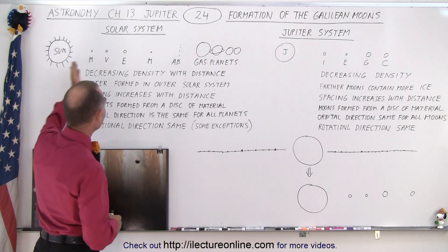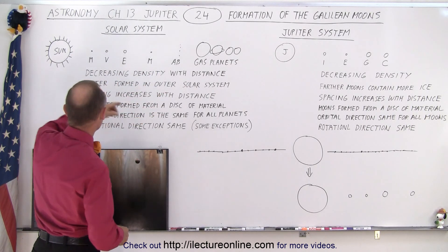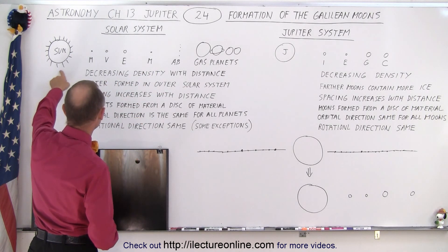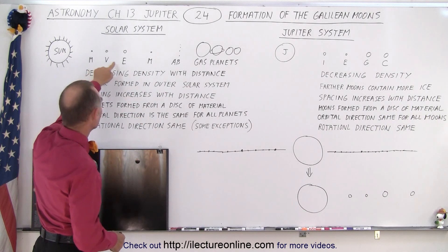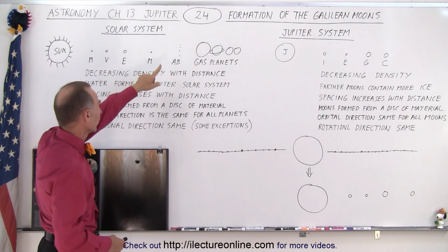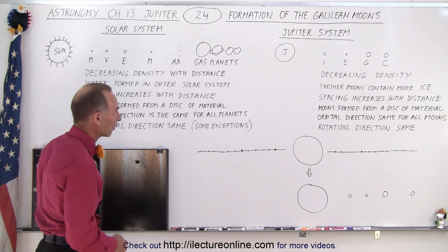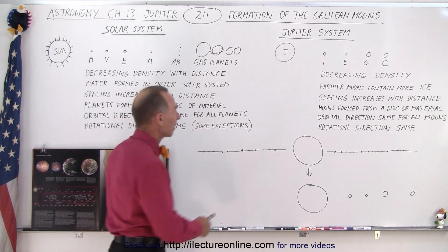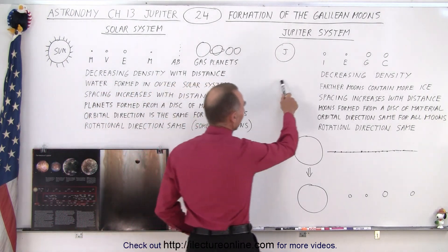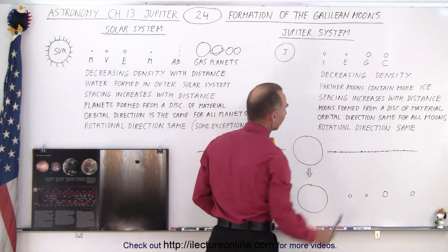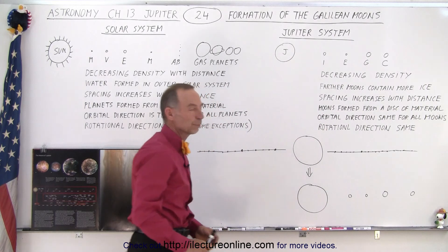Here we have basically the solar system where we have the Sun, Mercury, Venus, Earth, Mars, the asteroid belt, and the four gas planets. And here we have Jupiter and the four Galilean moons.